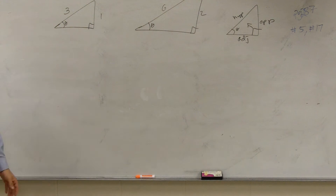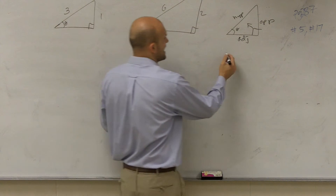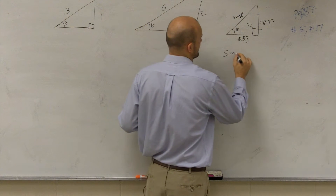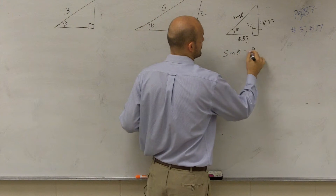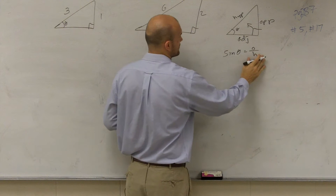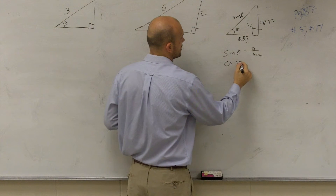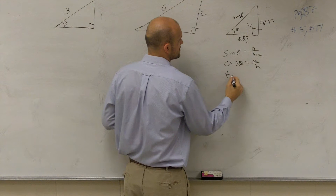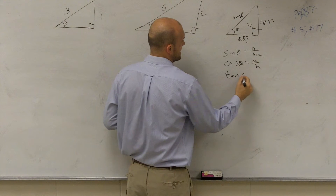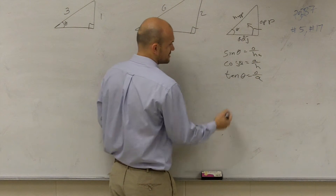So what they're asking us to do is to find the sine, cosine, and tangent. Remember, sine of your angle theta is equal to opposite over hypotenuse. Cosine of theta is equal to adjacent over hypotenuse. And tangent of theta is equal to opposite over adjacent.